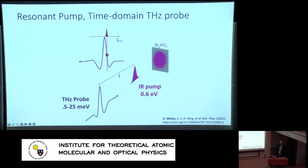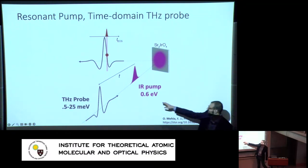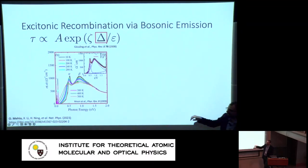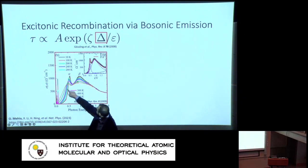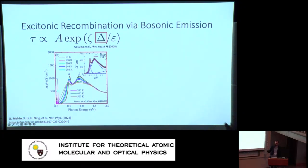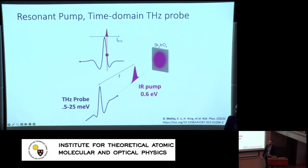The experiment is an infrared pump / terahertz probe measurement. We pumped at 0.6 eV, resonant with the alpha peak — the lower to upper Hubbard band transition. An audience member asks about the orbital content; the speaker clarifies they are doing an iridium-to-iridium charge transfer, so there is no orbital content complication like in the cuprates. That's one reason they chose this material — the transition is dominated by in-plane iridium-to-iridium charge transfer, making it a clean single-band picture.